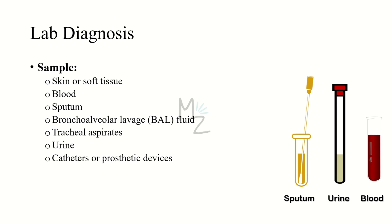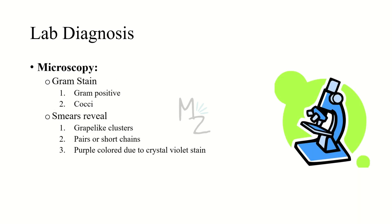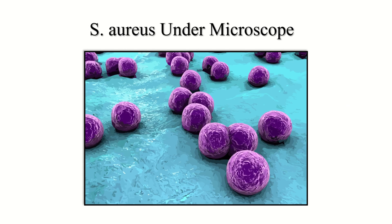Lab diagnosis — samples needed: skin or soft tissue, blood, sputum, bronchoalveolar lavage (BAL) fluid, tracheal aspirates, urine, catheters, or prosthetic devices. Microscopy: gram stain will reveal it is a gram-positive coccus, purple colored due to crystal violet stain. Smears also reveal grape-like clusters, pairs, or short chains. It is spherical, round, or berry-like in nature.